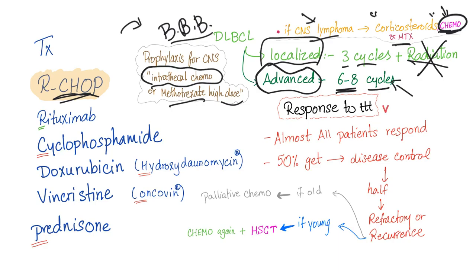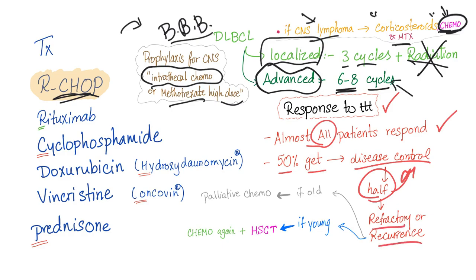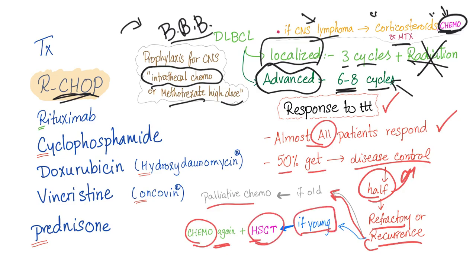The response to treatment is usually good—almost all patients respond. About 50% of patients achieve disease control, but half of them will have refractory disease or cancer recurrence. If recurrence occurs, management depends on age: older patients receive palliative chemotherapy, while younger patients undergo repeat chemotherapy and hematopoietic stem cell transplant. Stem cell transplant is reserved for younger patients. Remember: R-CHOP for diffuse large B-cell lymphoma.